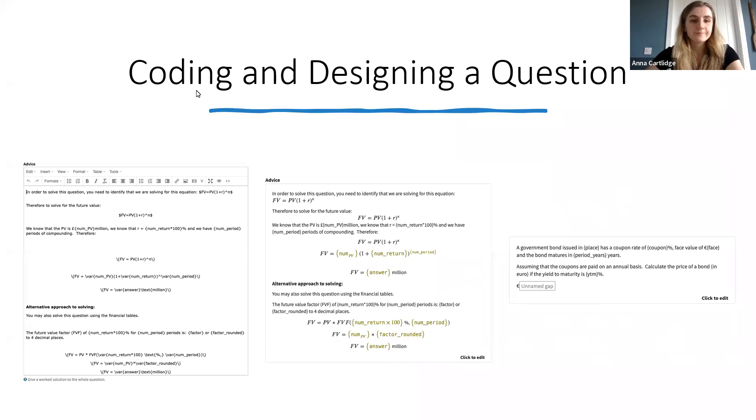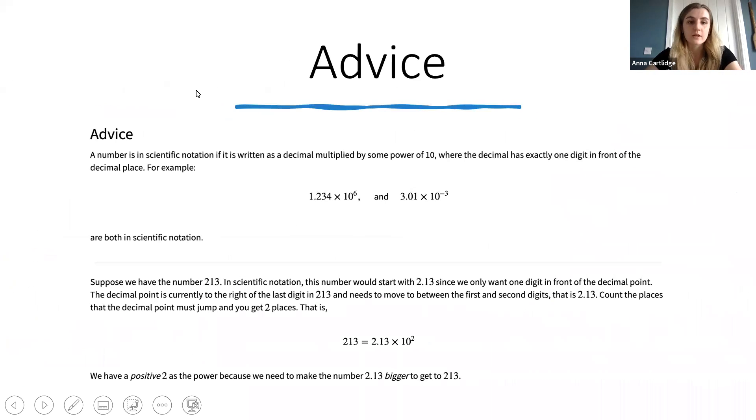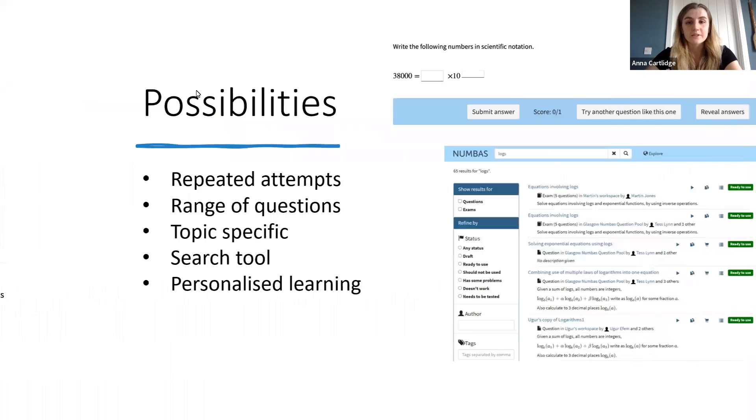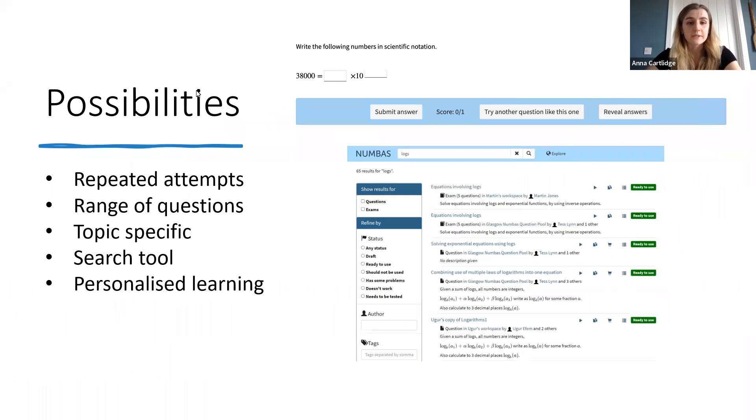As students, it's also great to not have to wait for a response from lecturers or tutors but to get instant answers and advice for specific questions. This saves time for both students and lecturers and allows for flexibility. Students can reveal answers before attempting a question to read the advice and learn how to approach it. The randomization feature is particularly useful for repeated practice in areas of difficulty, and students can keep doing questions until they fully understand the topic. This is available through the try another question like this one button.